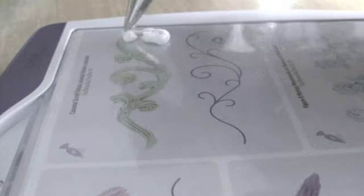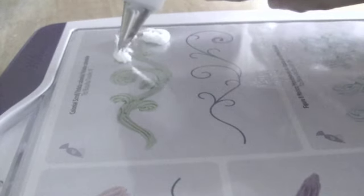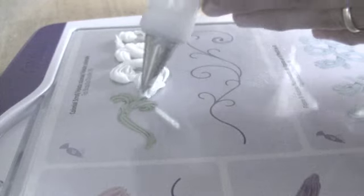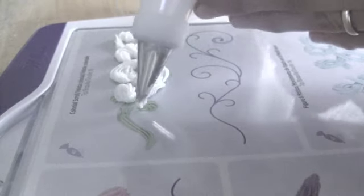You could also use this same technique to do floral vines if you wanted to use a tip number 3, which is a small round tip. And that way instead of piping these colonial scrolls, you would be piping floral stems.